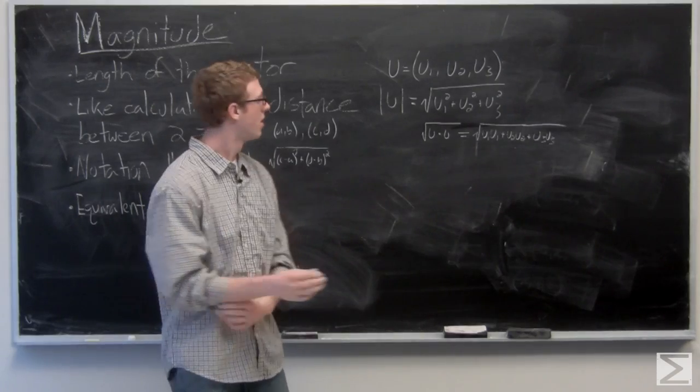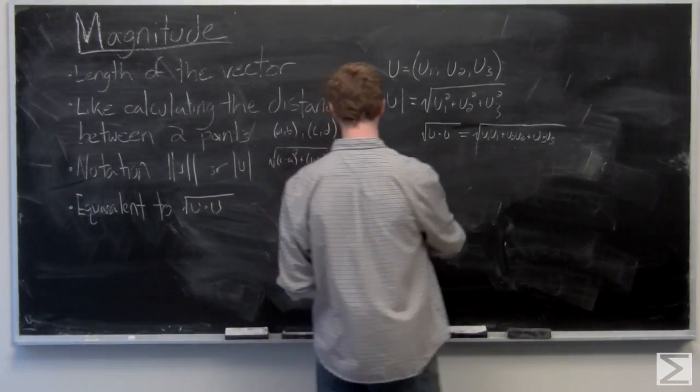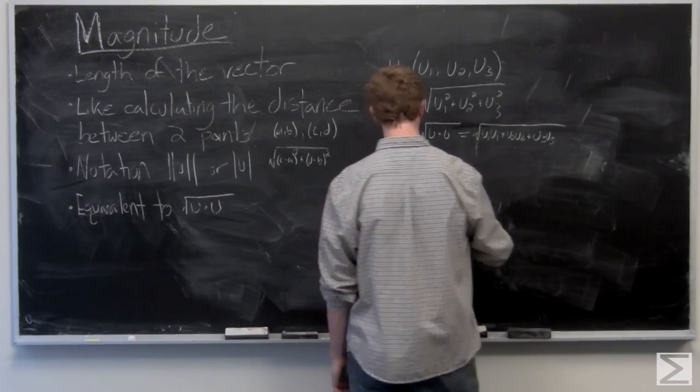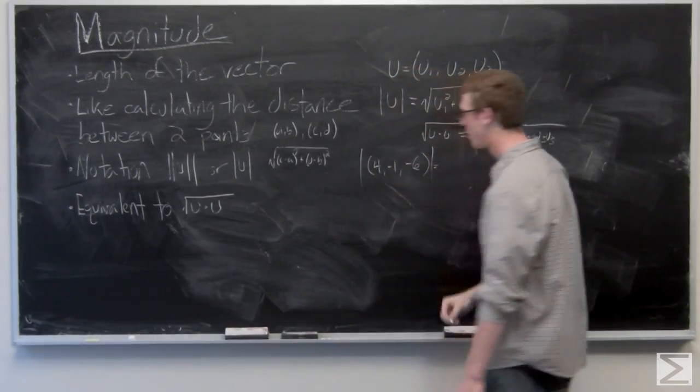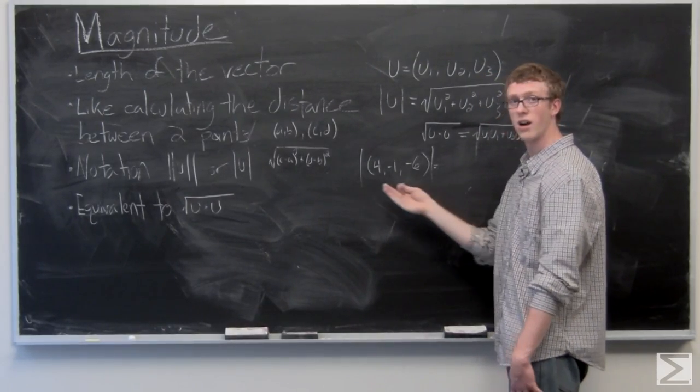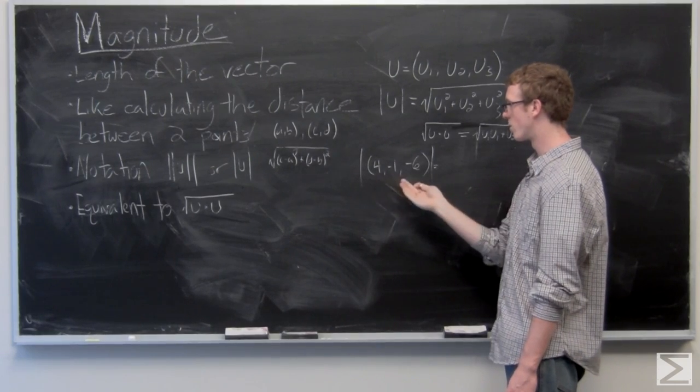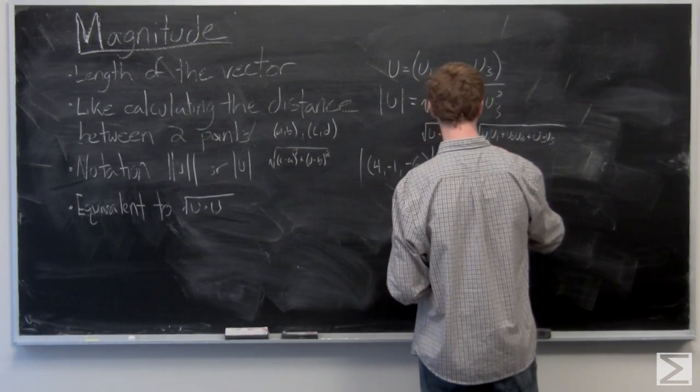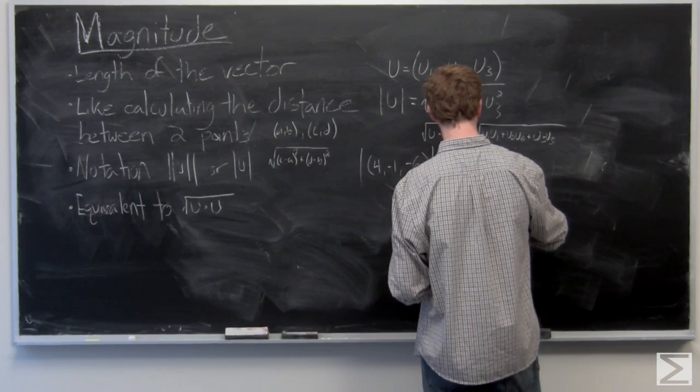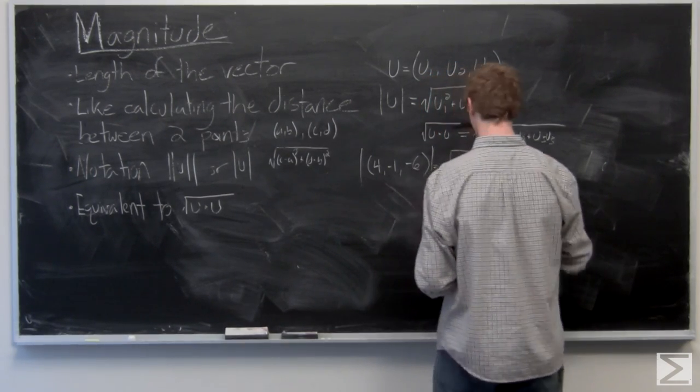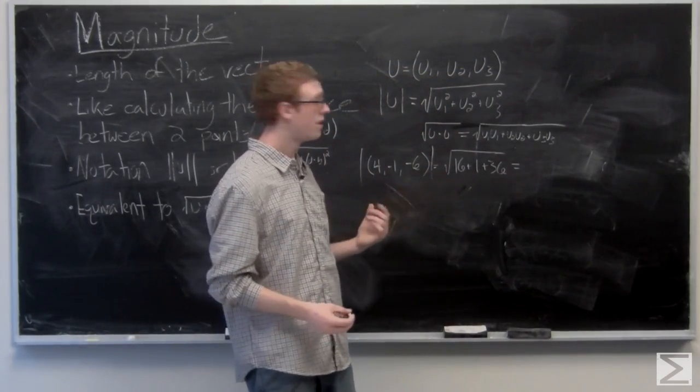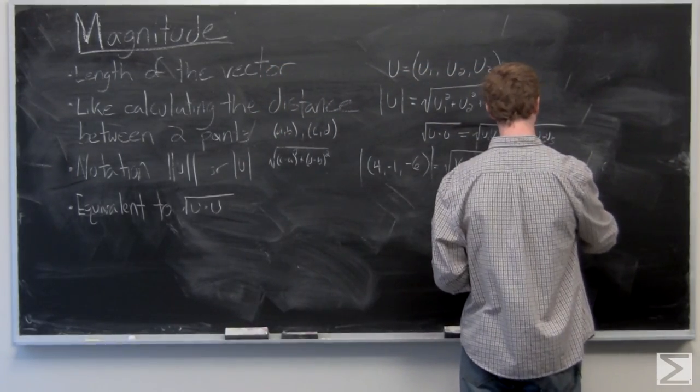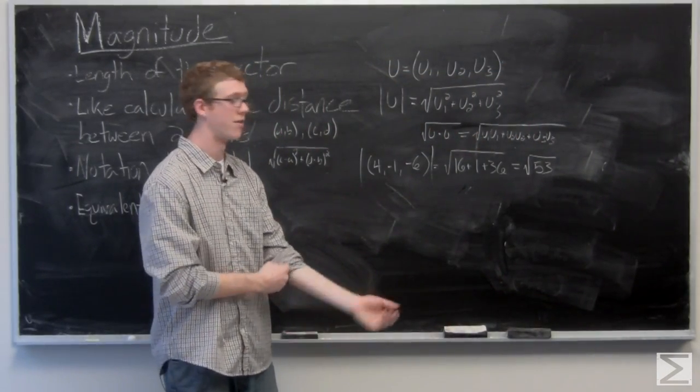We'll take a look at a quick example just to see what it looks like with actual numbers. So if we want to find the magnitude, you're going to see it denoted like that in a lot of places. That means find the magnitude. 4 squared, negative 1 squared, and negative 6 squared. Add them all together, take the square root. 4 squared is 16. Negative 1 squared is 1. Negative 6 squared is 36. Add them all together, 53. So the magnitude of that vector is square root of 53.